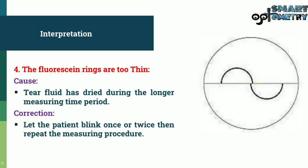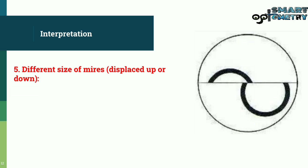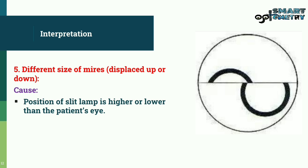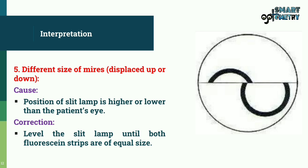Different sizes of mires displaced up or down indicate the position of the slit lamp is higher or lower than the patient's eye. Correction is to level the slit lamp until both fluorescent strips are of equal size.